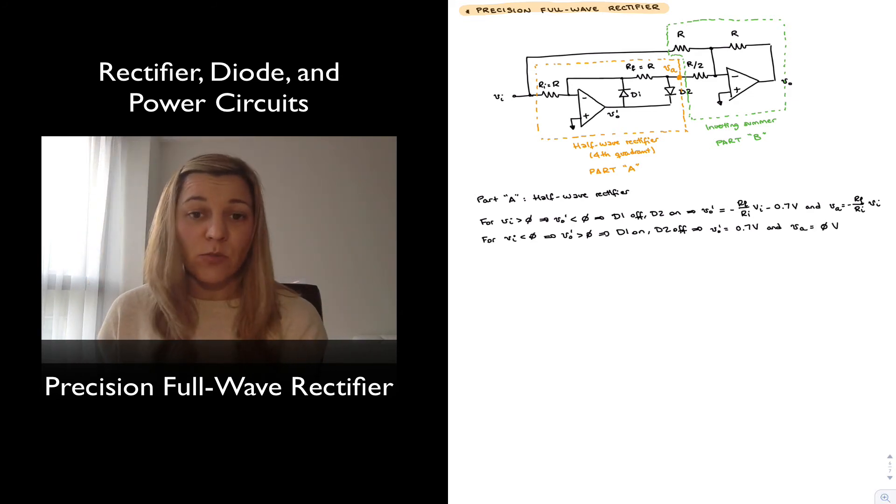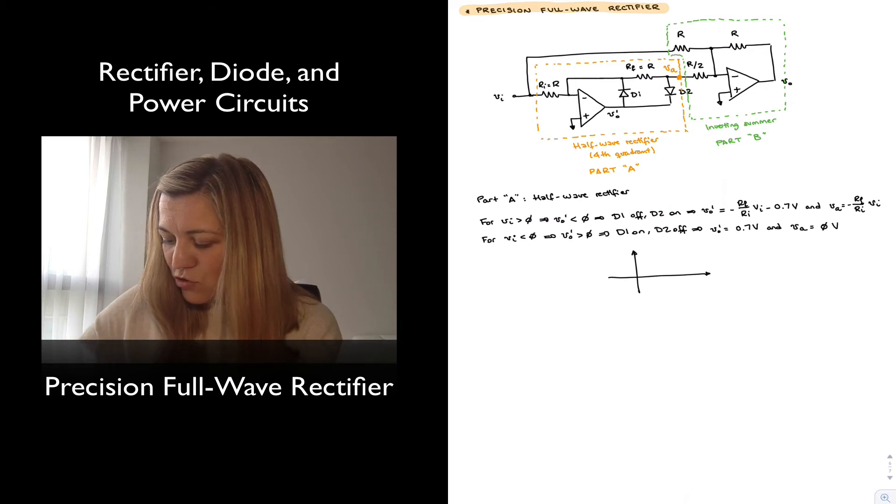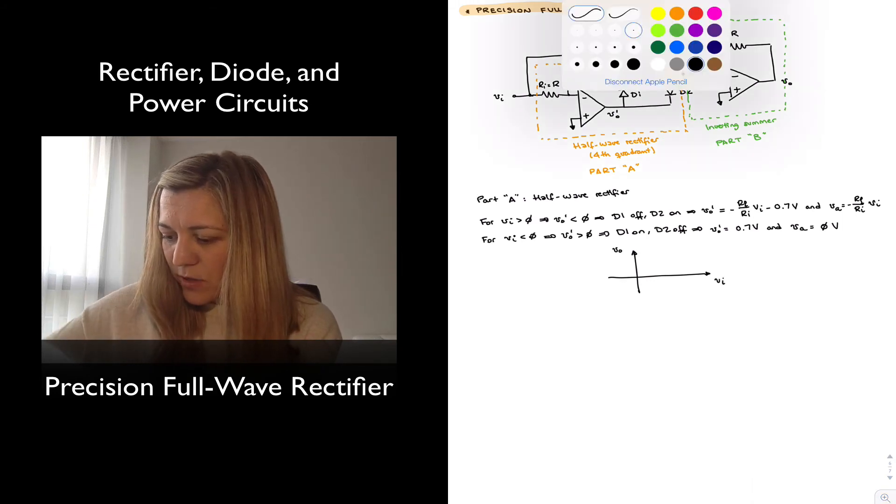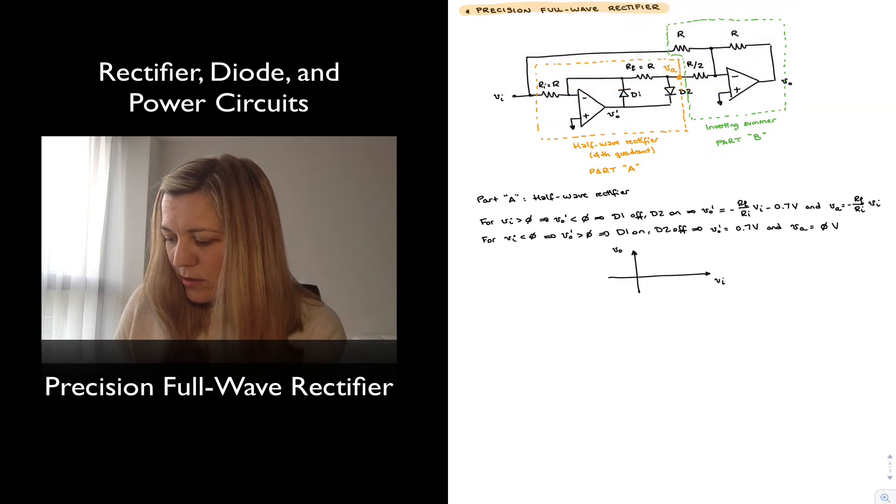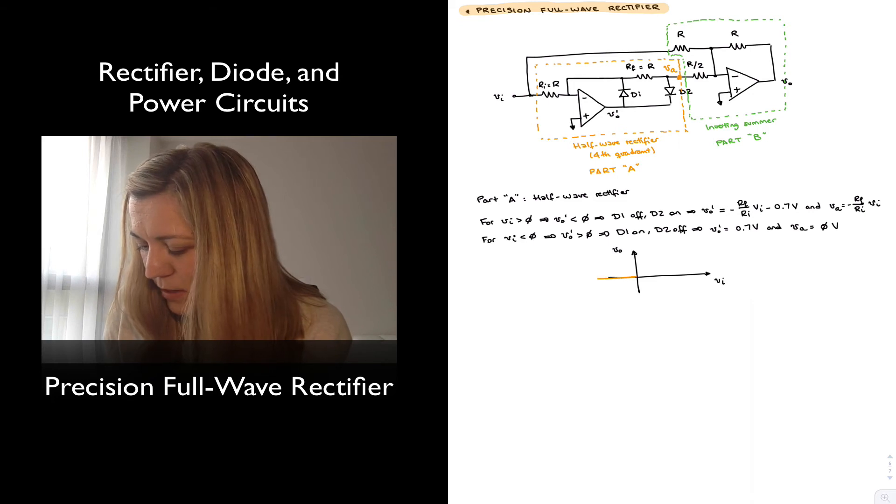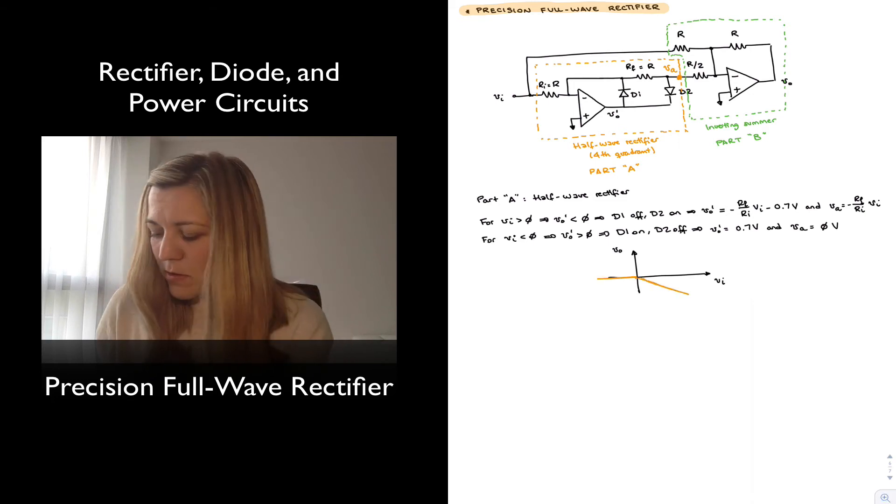And there's going to be no current flowing through resistor RF and therefore VA is just going to be equal to 0 volts. And this is consistent with what we had seen previously with the fourth quadrant half wave rectifier. So in other words, if I am to draw my voltage transfer characteristic, Vout versus Vin, it could be 0 for negative values of Vin and minus RF over RI times Vin for positive values of Vin.